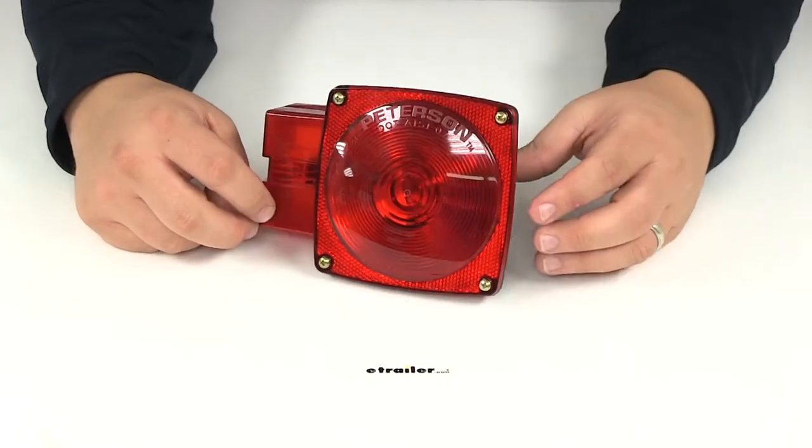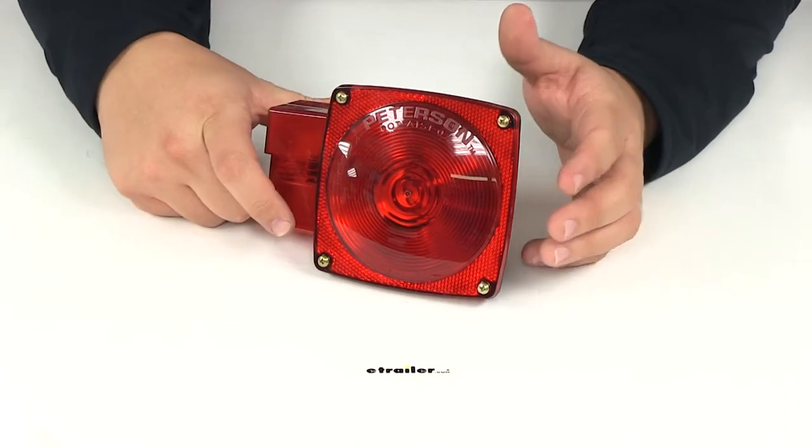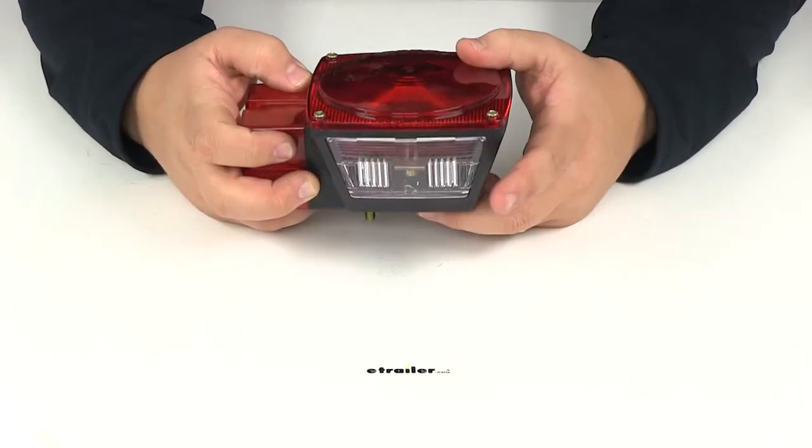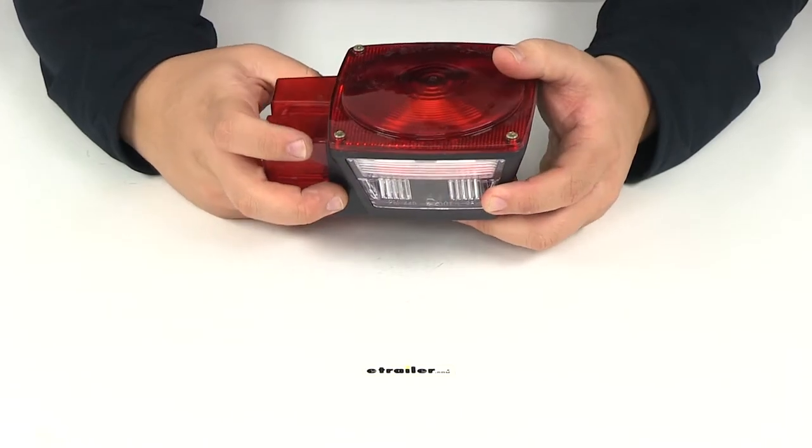This light is going to perform as a stop, turn, tail light, rear and side reflector and side marker as well as a license plate illuminator. You can see that portion down here on the base of the housing.